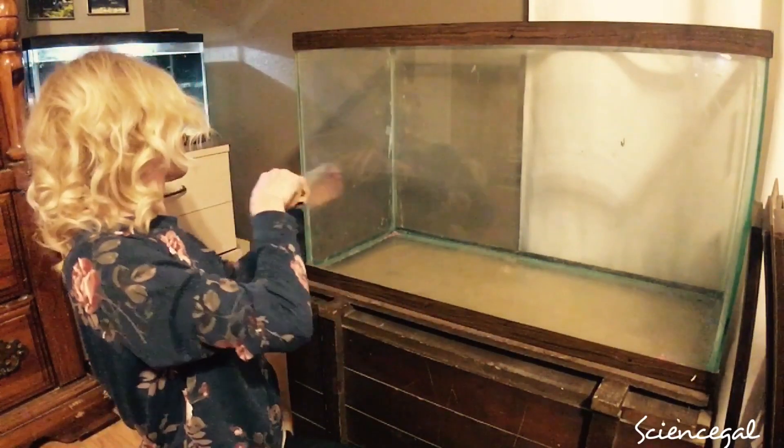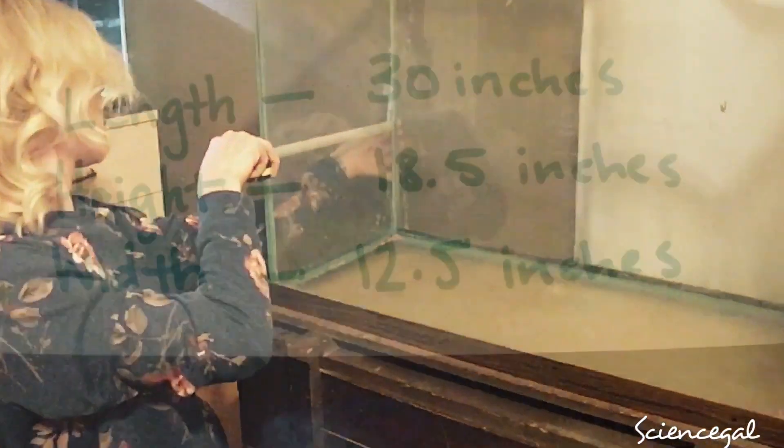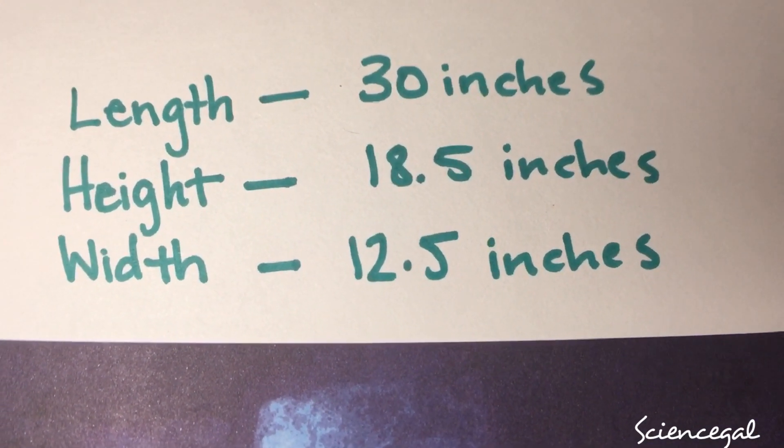So after measuring the dimensions of my fish aquarium, I got 30 inches in length, 18.5 inches in height, and 12.5 inches in width.